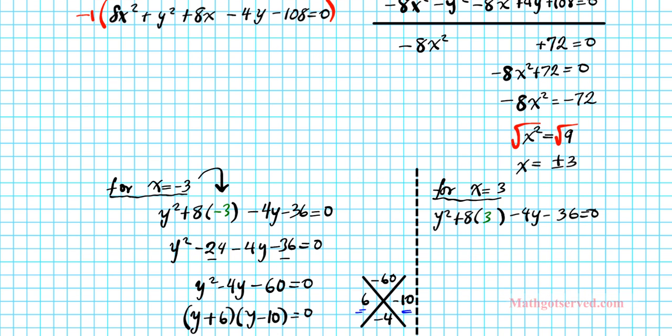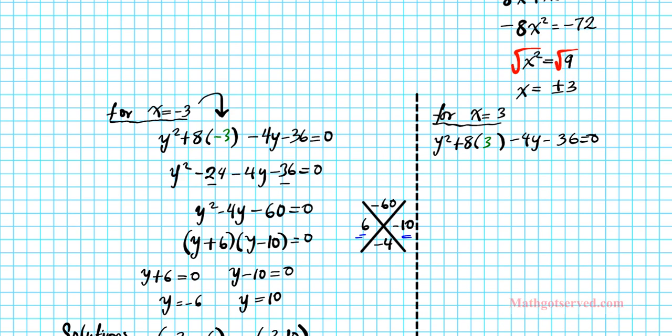So let's go ahead and express this in standard form. y² + 24 - 4y - 36 = 0. In standard form, we have y² - 4y. Combine positive 24 and -36. We'll get -12 = 0. So we're going to solve the resulting quadratic equation the same way we did the other one, just using factorization by grouping.